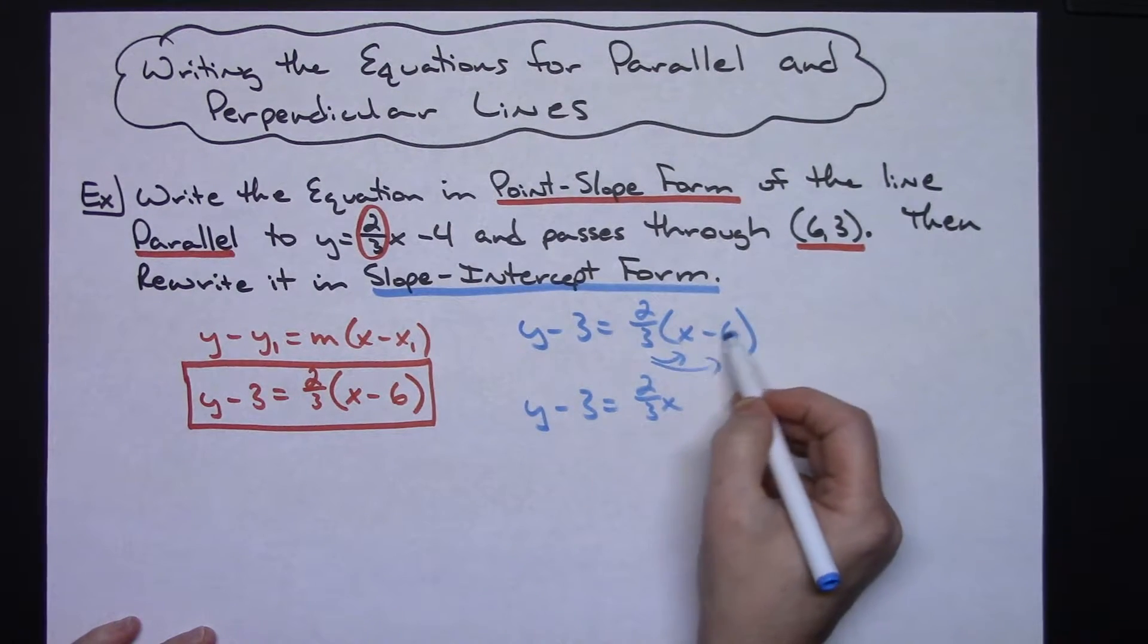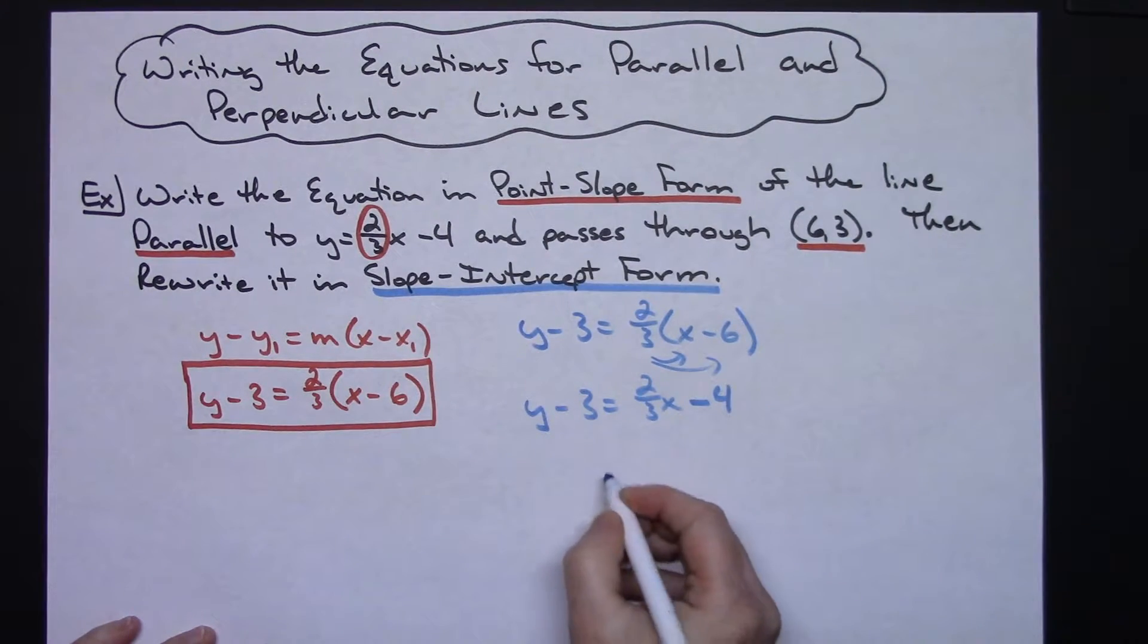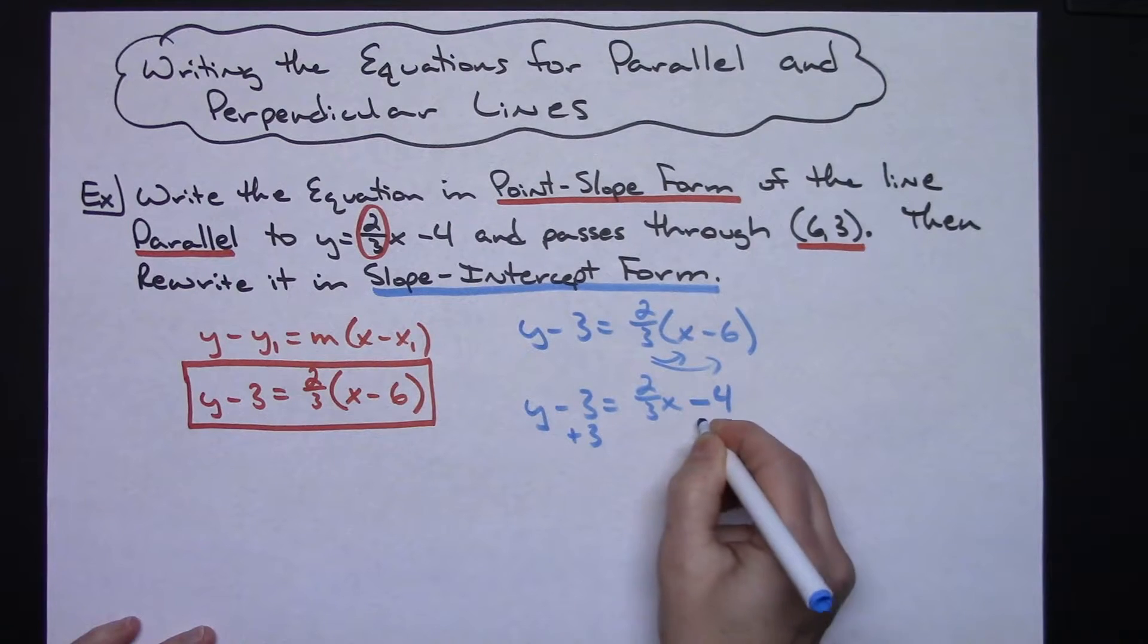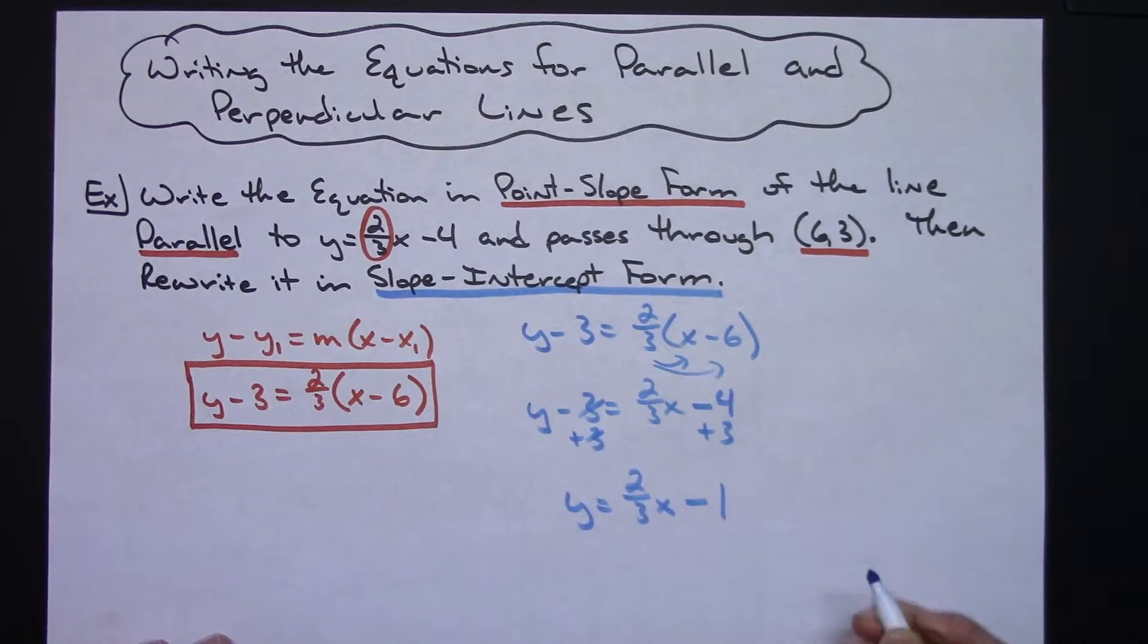3 is going to go into 3 once, 3 will go into 6 two times. 2 times 2 is going to give me a minus 4. Then I'm going to add 3 to both sides and I'm going to have a y equals a two-thirds x minus 1.